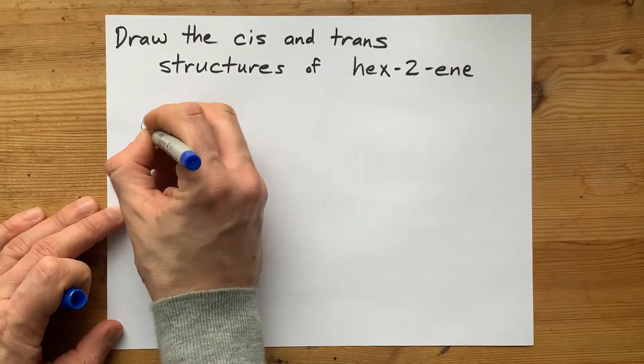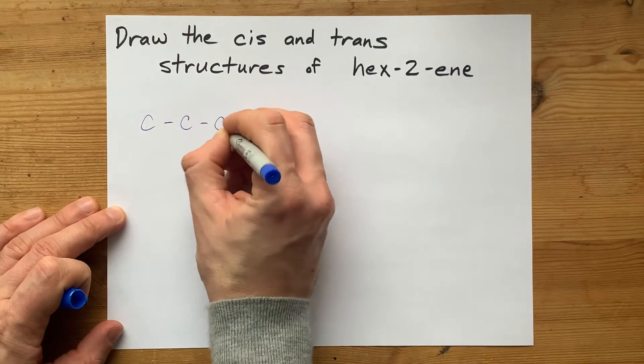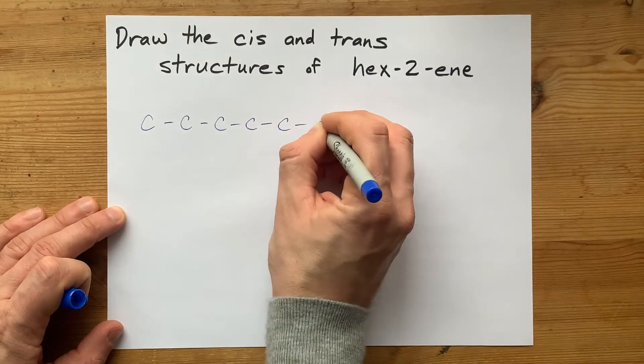Hex means that there are six carbons in the chain. One, two, three, four, five, six.